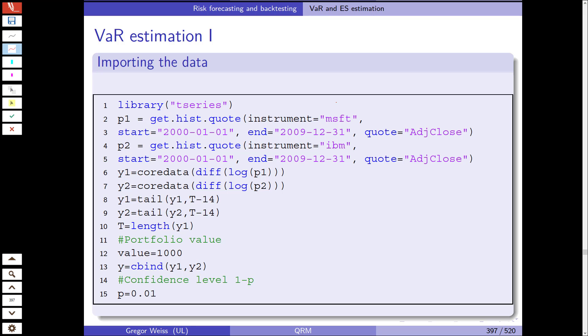We start out by loading the library T-series. We again get those historical quotes for Microsoft and IBM stocks. We take the log differences in the prices and this gives you the log returns in line six and seven. So Y1 and Y2, those are the returns. We cut out some data and then we immediately combine those two columns in line 13 by C-bind and we get a matrix for those two stocks.